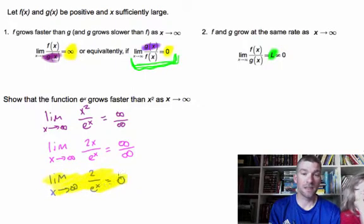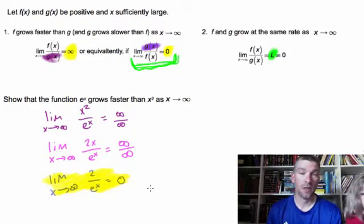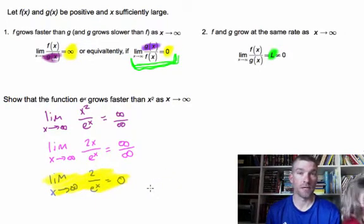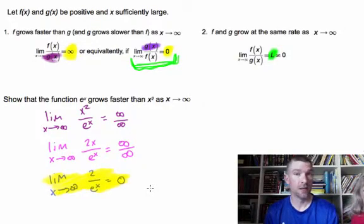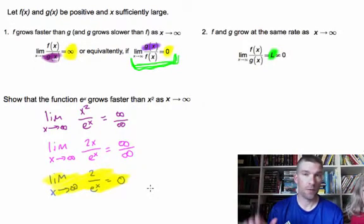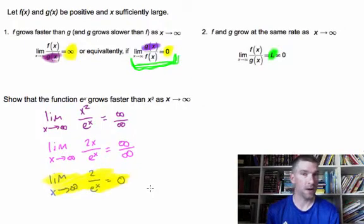Since this limit goes to zero, we can say that e to the x grows faster. That's all we're trying to do with looking at these different rates of change — a lot of application of L'Hôpital's rule. Try and figure out which equation you think is going to grow fastest, put it on the bottom, and then start investigating.